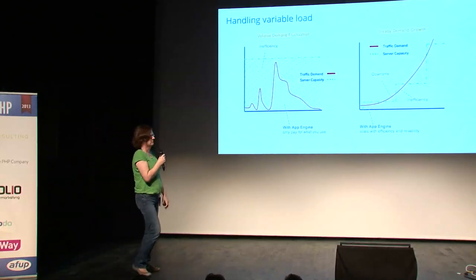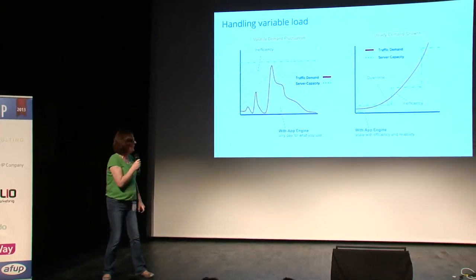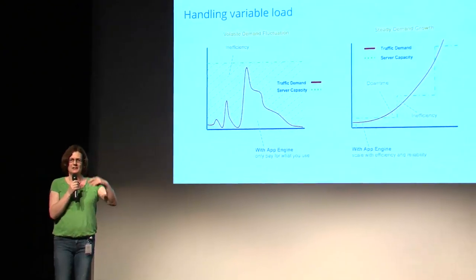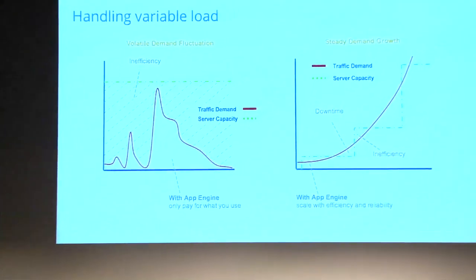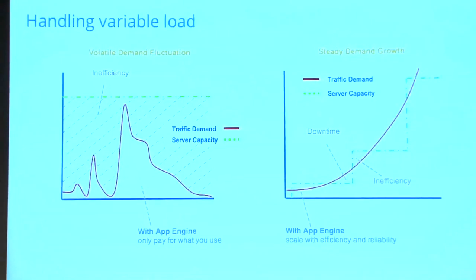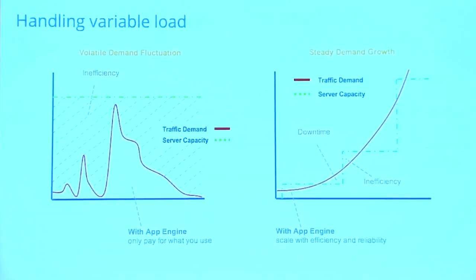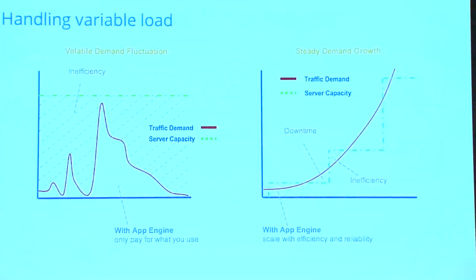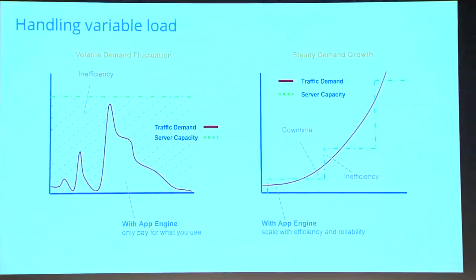On the right-hand side, we have an exponential growth curve with stair-step provisioning. You start with too much capacity, then growth occurs and you don't have enough — experiencing downtime and higher latency. So you provision more instances, now you have more than you need again, and the curve catches you up iteratively. With App Engine, it tracks demand so you only have the resources you need when you need them.